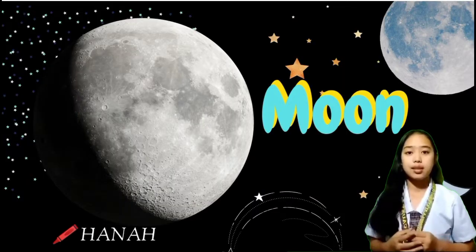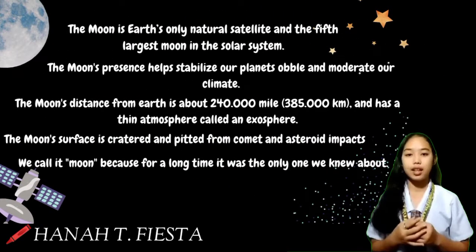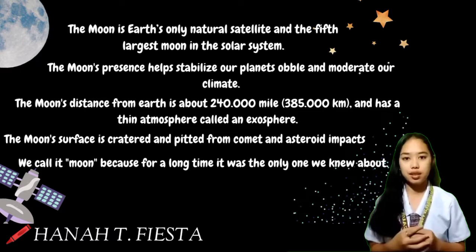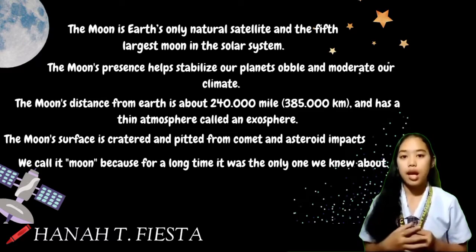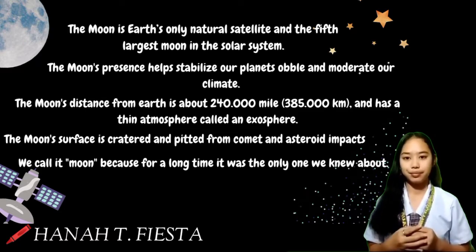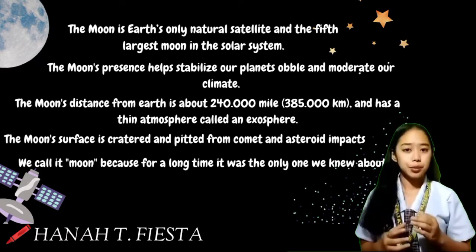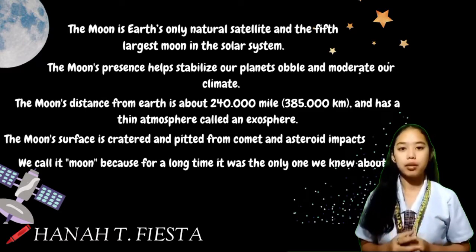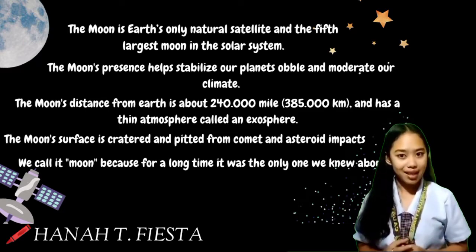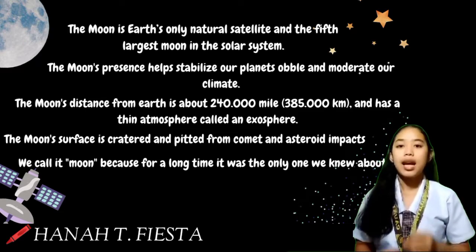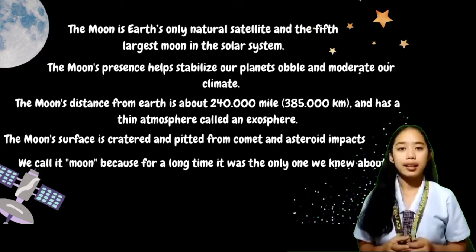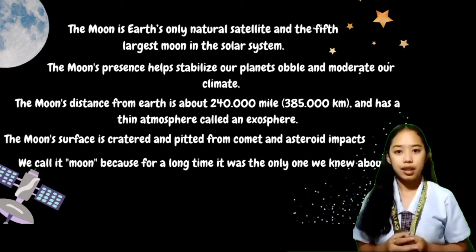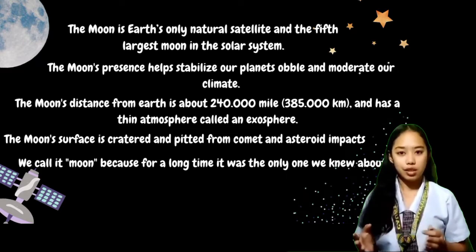The Moon is the Earth's only natural satellite and the fifth largest moon in the solar system. The Moon's presence helps stabilize our planet's wobble and moderate our climate. The Moon's distance from Earth is about 240,000 miles or 385,000 kilometers, and it has a thin atmosphere called an exosphere.